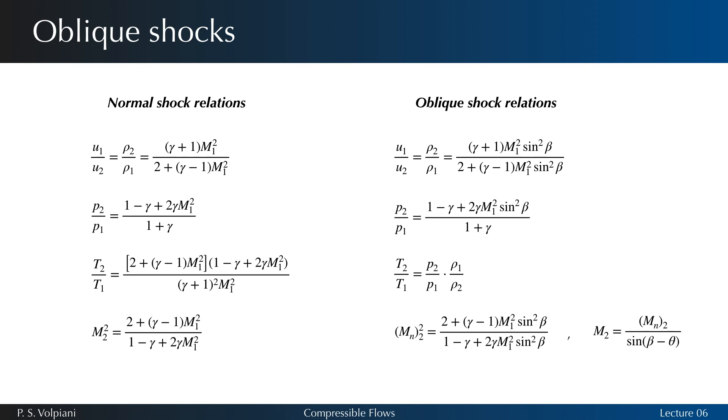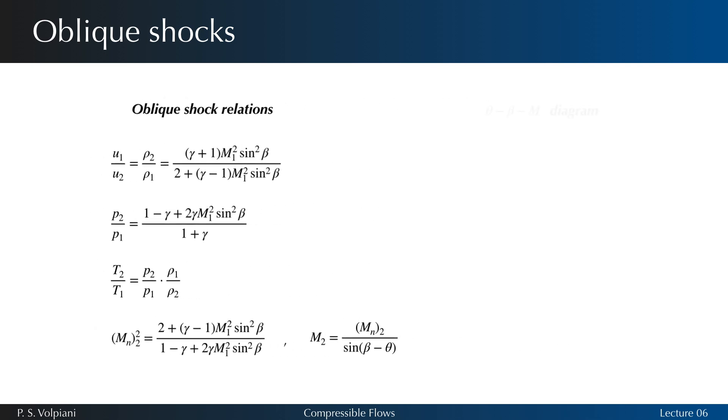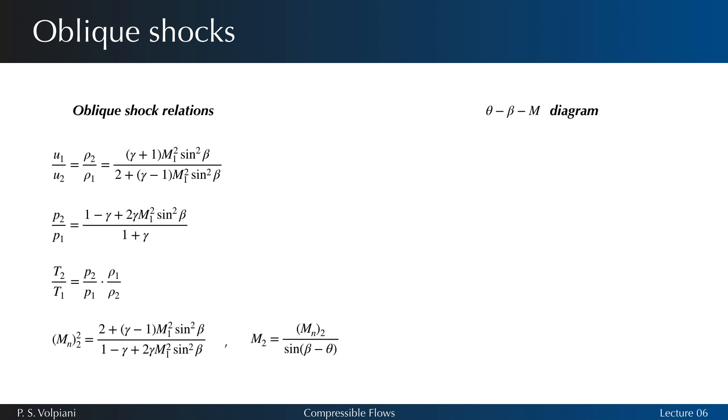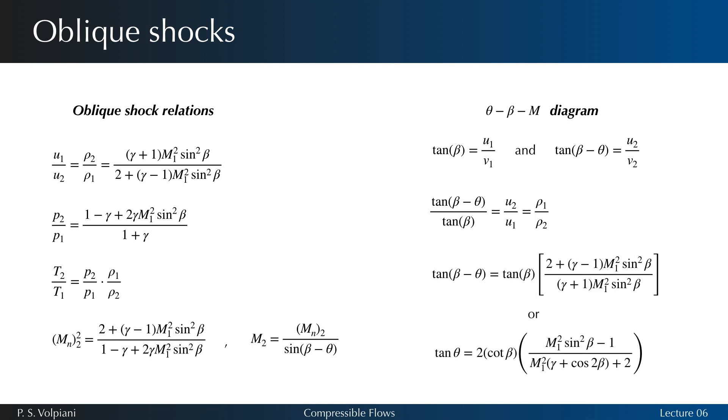Note that to have a shock, it is necessary to have the upstream normal Mach number greater than 1, which indicates that beta is greater than the arcsine 1 over M1. Referring to the geometry of the oblique shock, we have that the tangent of beta equals U1 over V1 and the tangent of beta minus theta equals U2 over V2. Since V1 equals V2, we have the following expression that leads to the following relation between beta and theta.